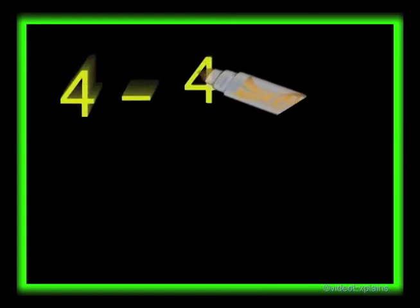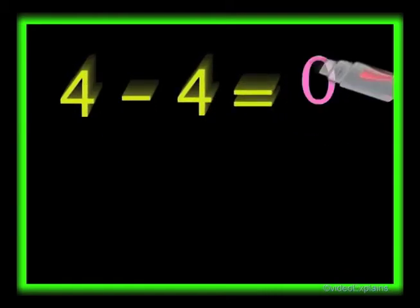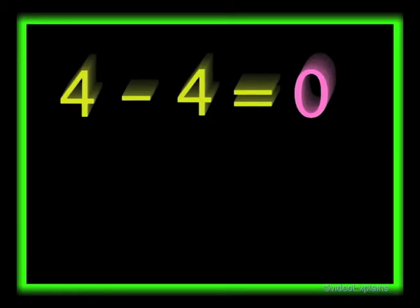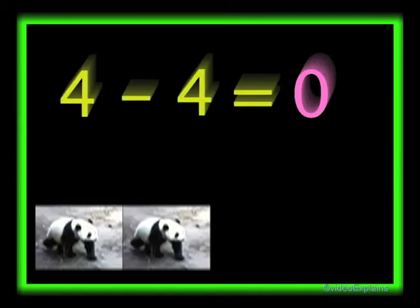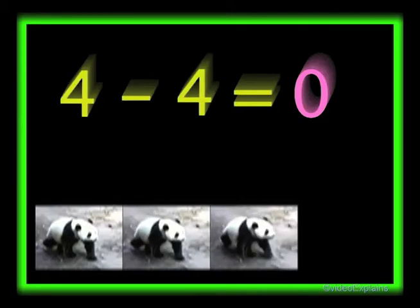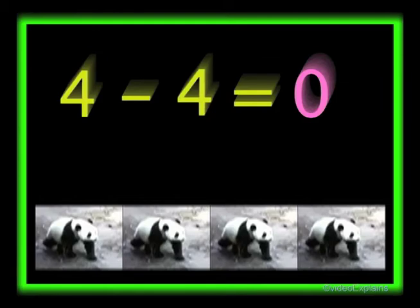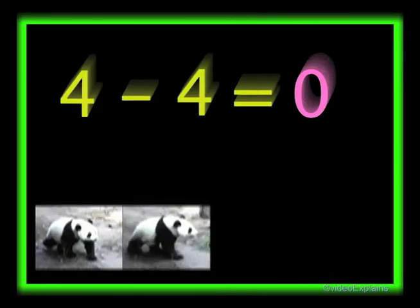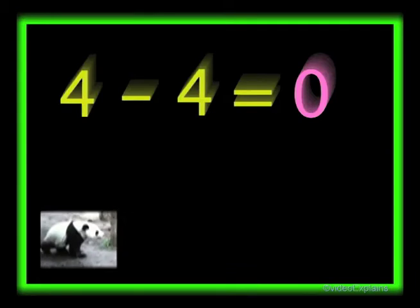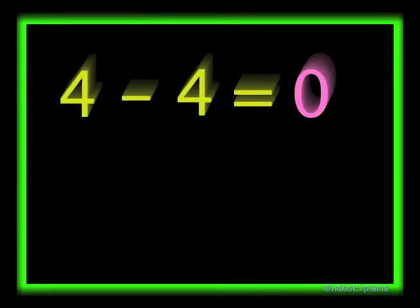Four minus four equals zero. There are four pandas: one, two, three, and four. If all of the pandas walk away, then there won't be any pandas left. One, two, three, four. So four minus four equals zero.